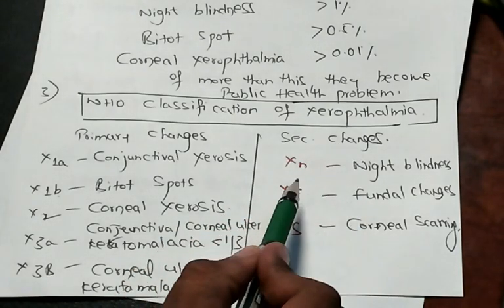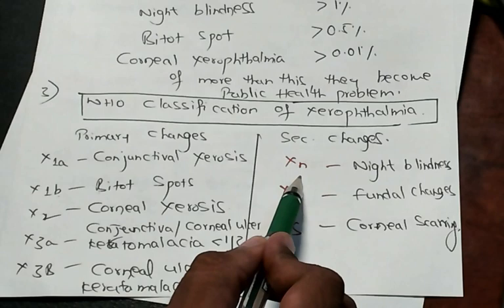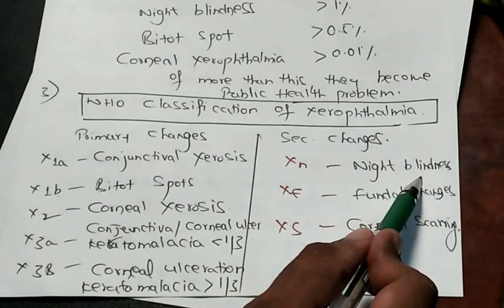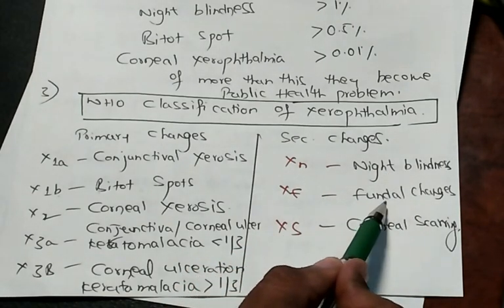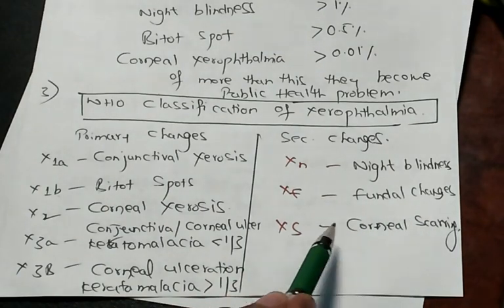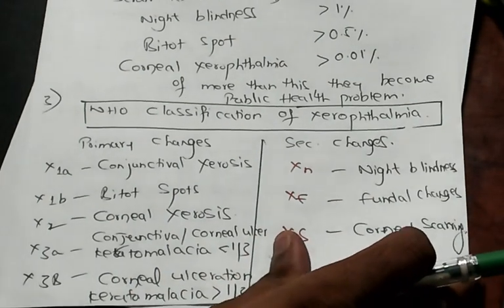What are the secondary changes? If it is XN, it is called night blindness. If it is XF, then fundal changes. XS is all about corneal scarring.